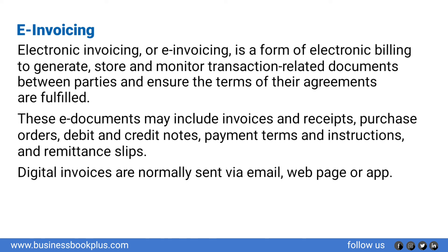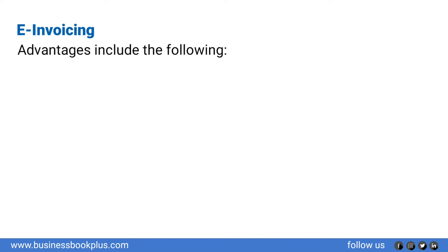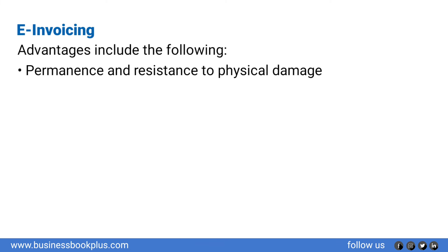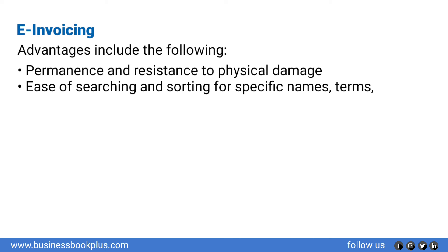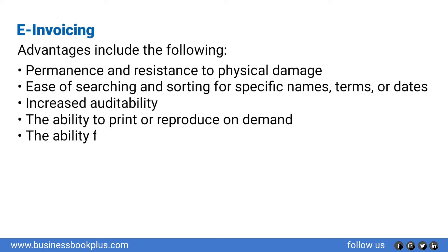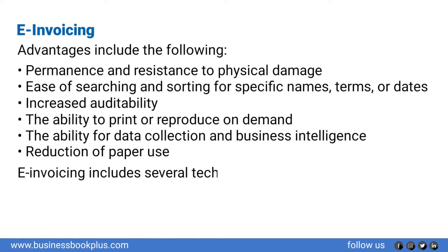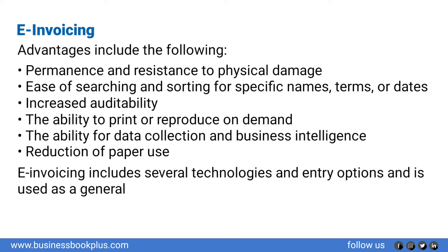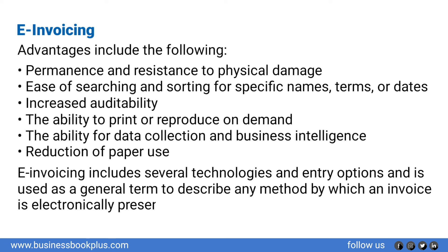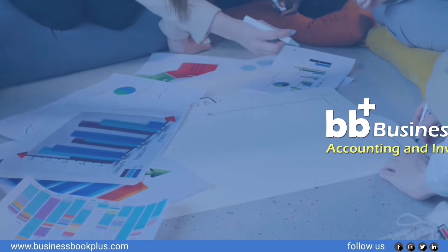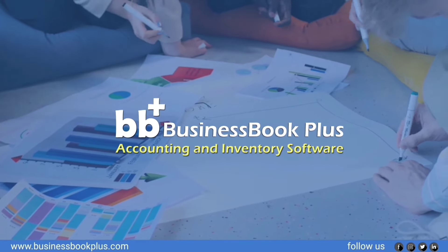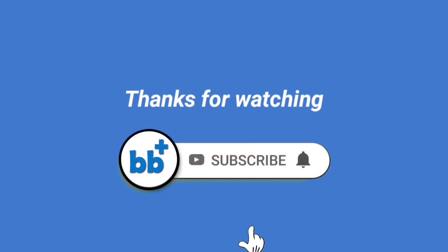Digital invoices are normally sent via email, web page, or app. Advantages include permanence and resistance to physical damage, ease of searching and sorting by name, terms, or dates, increased auditability, the ability to print or reproduce on demand, the ability for data collection and business intelligence, and reduction of paper use. E-invoicing includes several technologies and entry options and is used as a general term to describe any method by which an invoice is electronically presented to a customer for payment. That's all for this video. Join us in the next video to get to know the rules of recording a business transaction. Thanks for watching — don't forget to click the subscribe button and hit the bell icon for the latest updates.